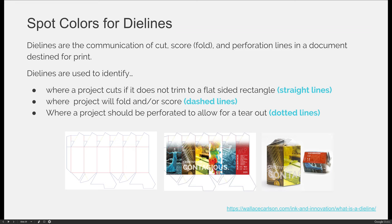Dye lines are the communication of cut, score — which are fold lines — and perforations in a document destined for print. You wouldn't do this in a digital document because there's no way to do any of those things digitally. Dye lines are used to identify where a product cuts if it does not trim to a flat-sided rectangle. If you're going to trim something to a square or rectangle with 90-degree corners, you'll use a guillotine cutter, which just cuts straight lines. When identifying on a dye line where something is going to cut, you'll use straight lines with your pen tool, and dash lines to indicate folds.